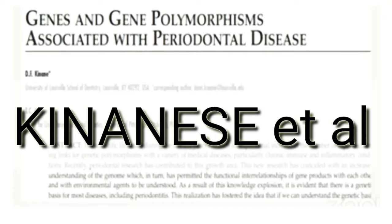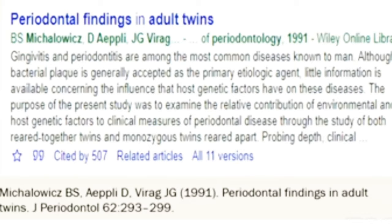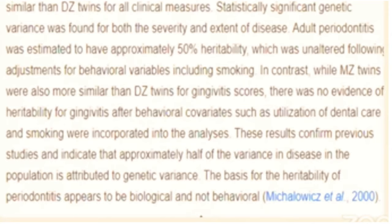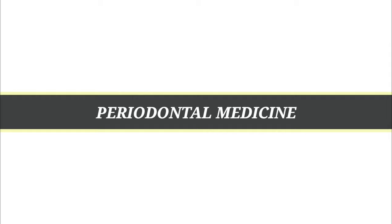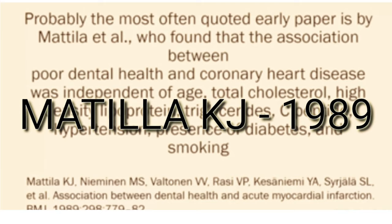We now come to genetics and the role of gene polymorphism in periodontitis. Kinane's paper on genes and gene polymorphisms associated with periodontal disease, Kornman's study on the interleukin-1 gene, and the famous twin studies of Michalowicz and Lewise are important here. The twin studies — 'Genetic and heritable risk in periodontal disease' (1994) and 'Periodontal findings in adult twins' (1991) — found that monozygotic twins have higher gingivitis scores than dizygotic twins.